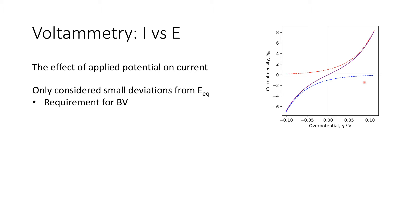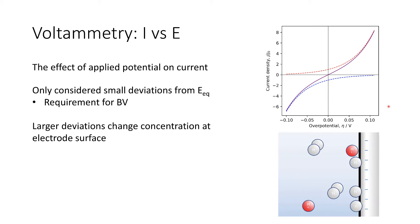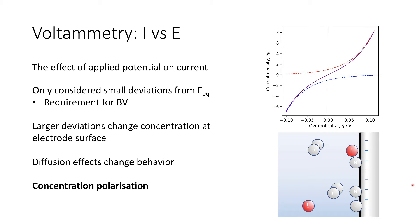These small deviations are a requirement for Butler-Volmer kinetics to be analysed, and a key assumption is that concentrations don't vary significantly. However, as we go to higher overpotentials, these can change the concentration at the electrode surface. Diffusion effects start to change the behaviour at that electrode, in a process called concentration polarisation.